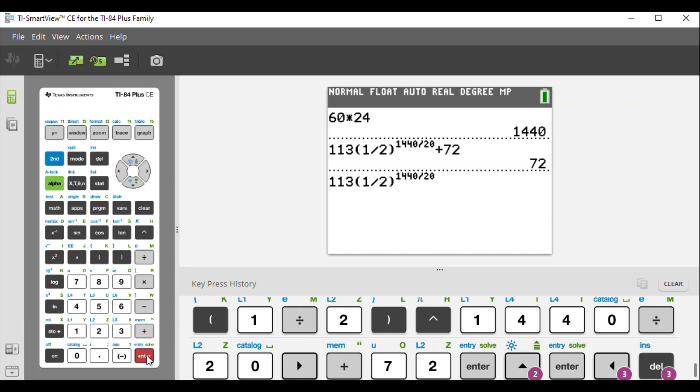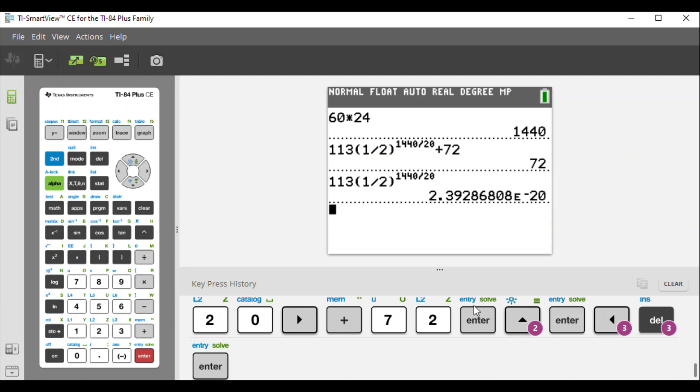So we take a look at this: 2.39286808 e to the negative 20. That means e negative 20, which means times 10 to the negative 20. I'll write this down to 4 decimal places: 2.393 times 10 to the negative 20.